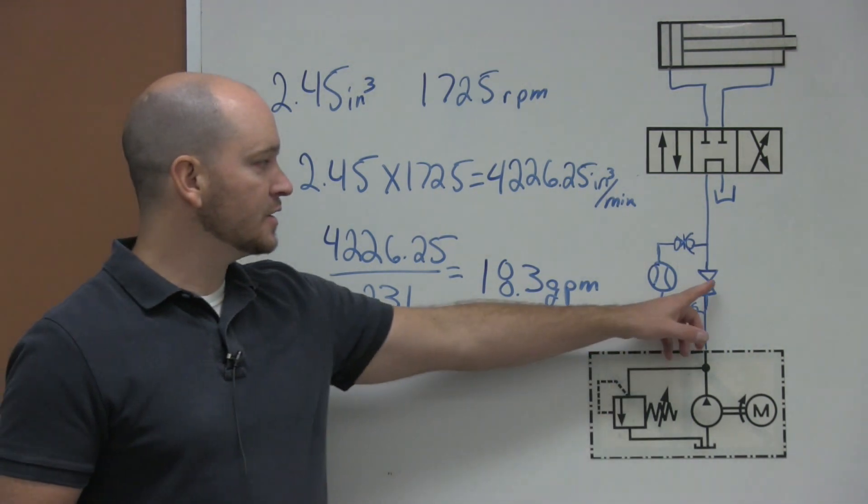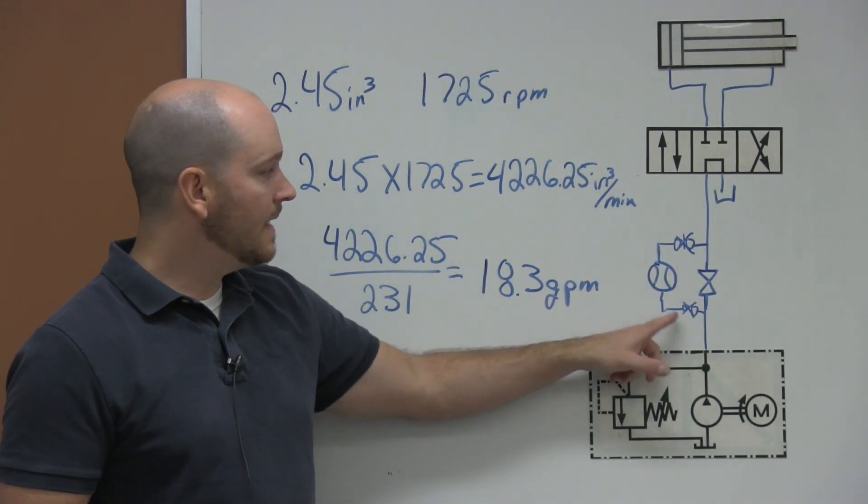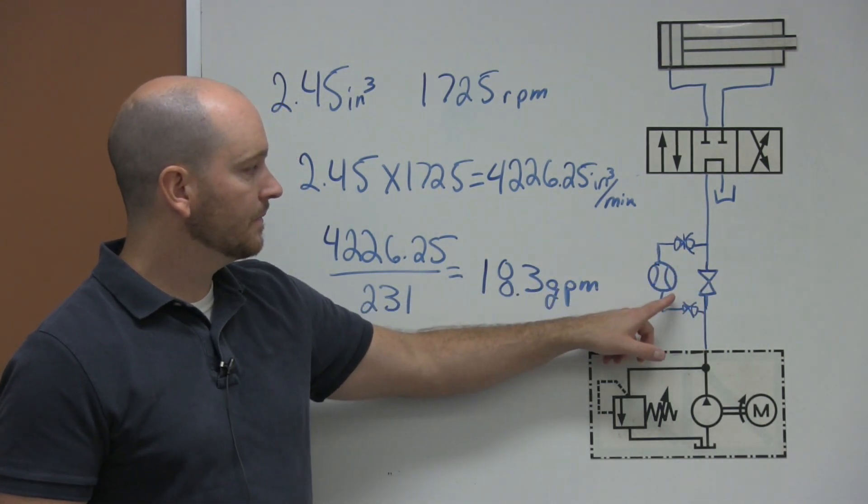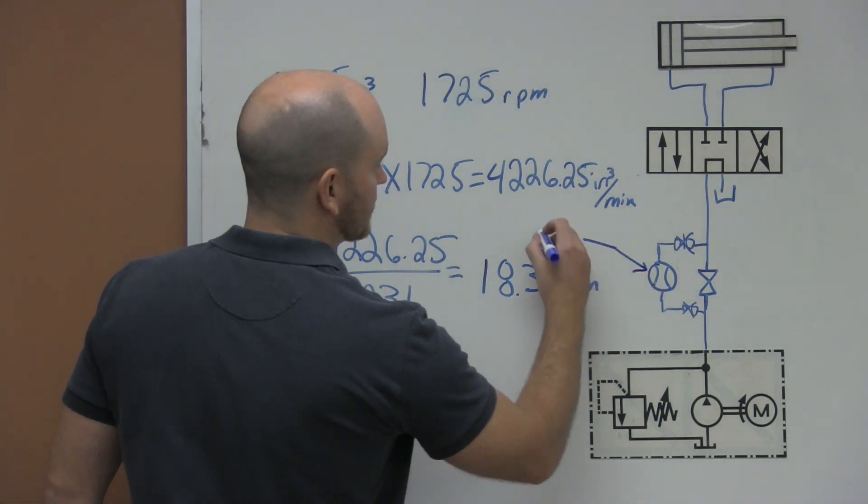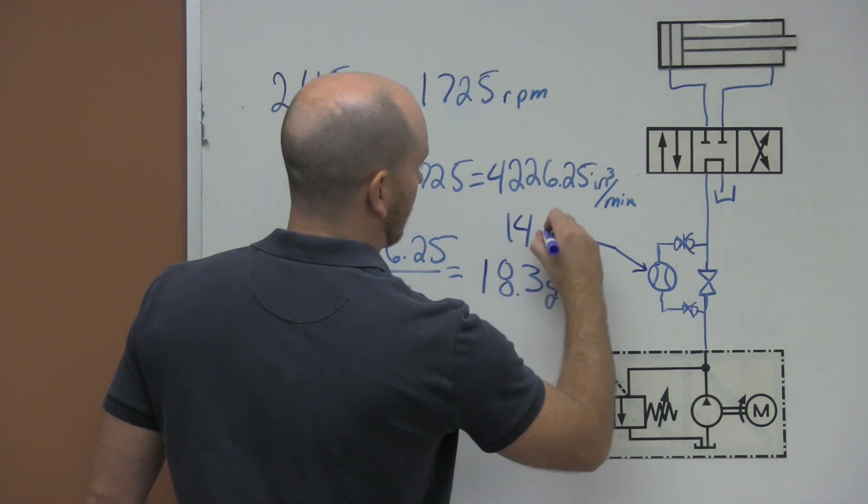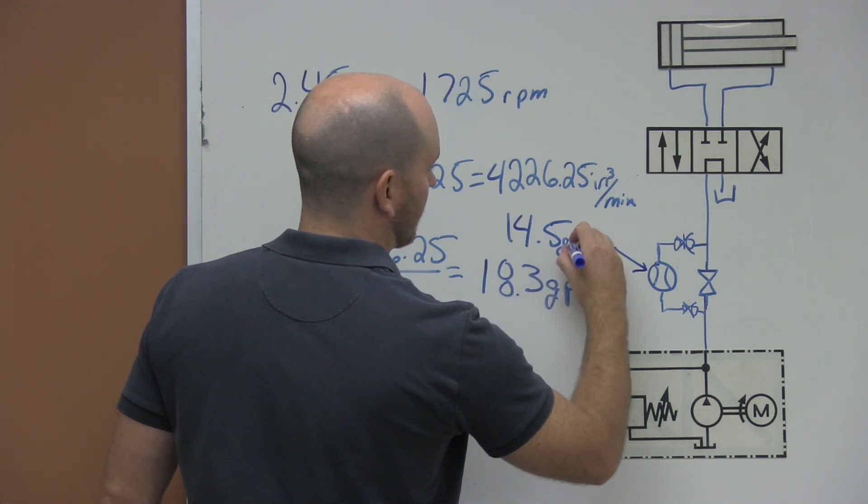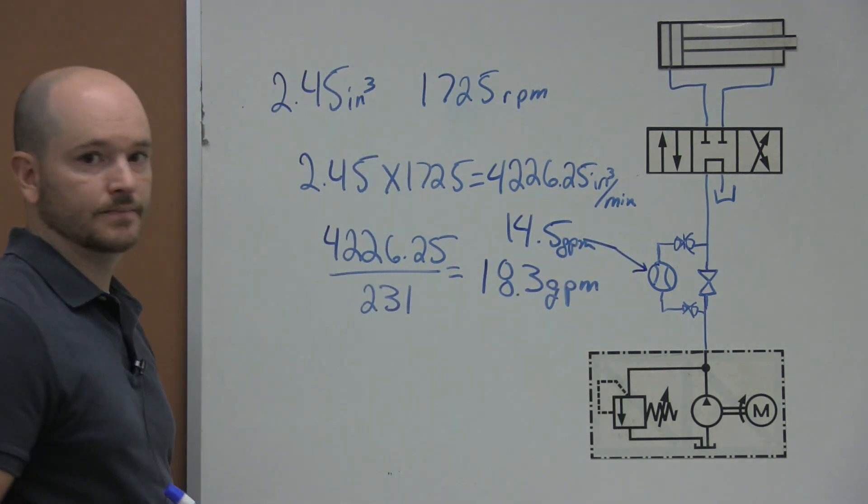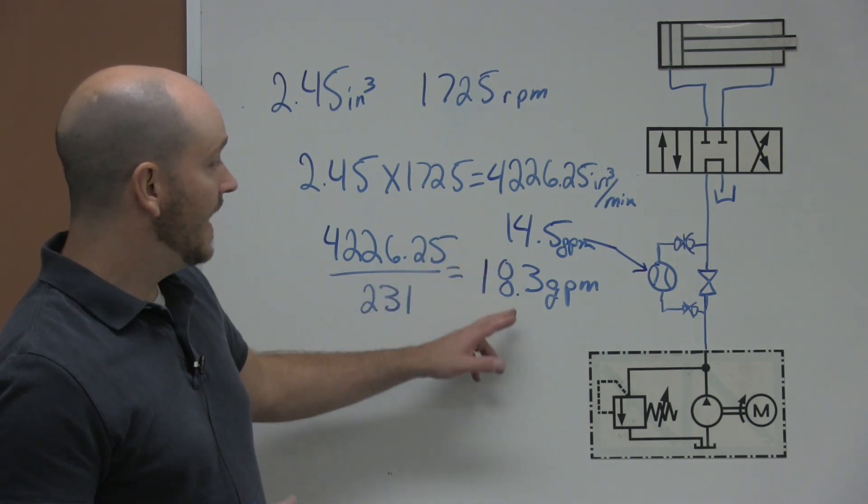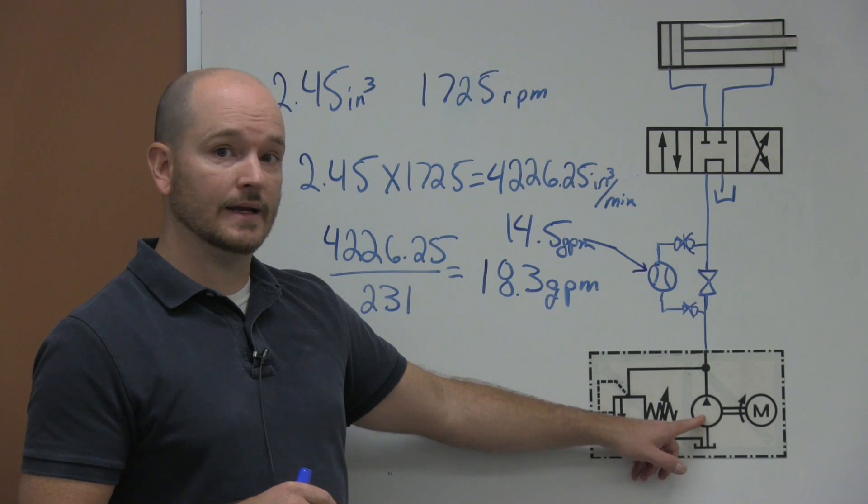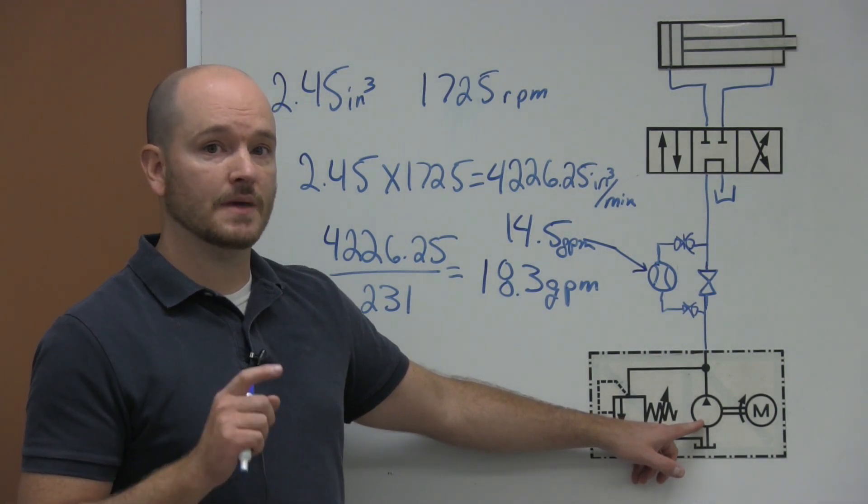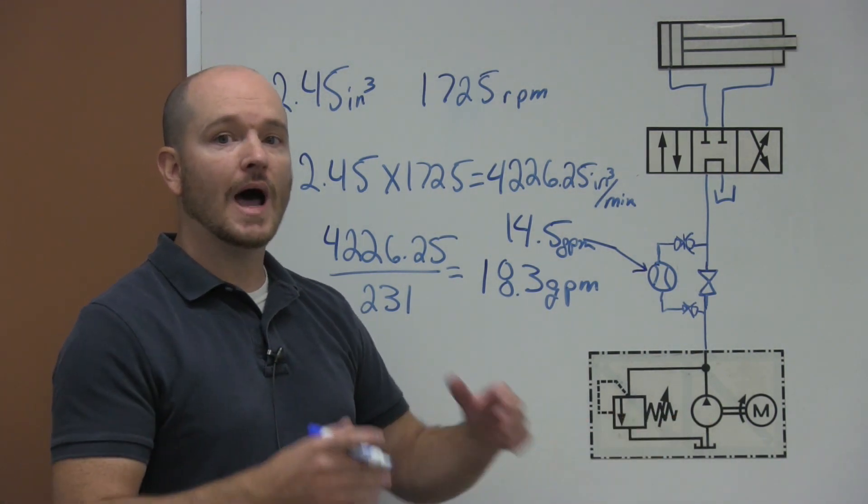So let's say I come here and shut my valve off, and then I hook up my flow meter and I'm looking at it, and right here I am measuring 14.5 gallons per minute. Now that's roughly 4 gallons less than what I calculated out my pump should be giving me at this given RPM. So how efficient is it?